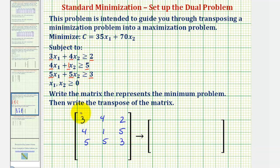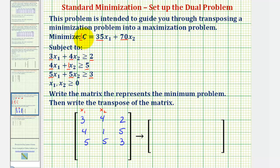Notice how the first column represents the coefficients of x sub one, the second column represents the coefficients of x sub two. This is important because for the last row, we will use the objective function, but we do want the coefficients of x sub one and x sub two first. So the last row will be 35, 70, and one for the coefficient of c.